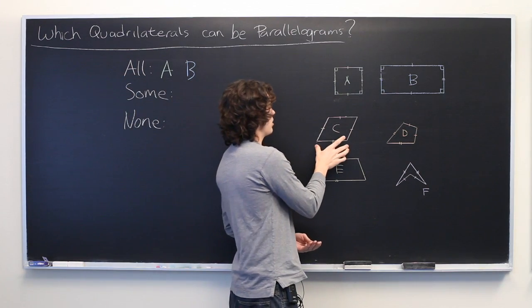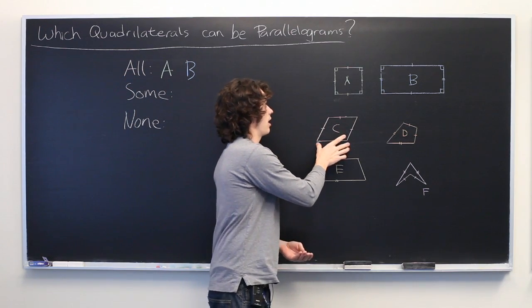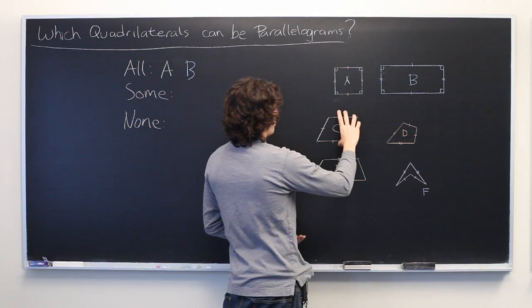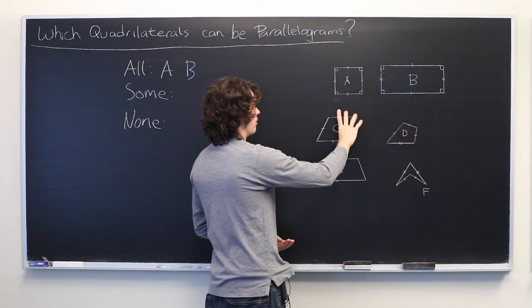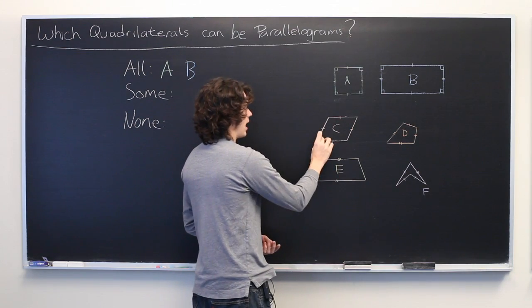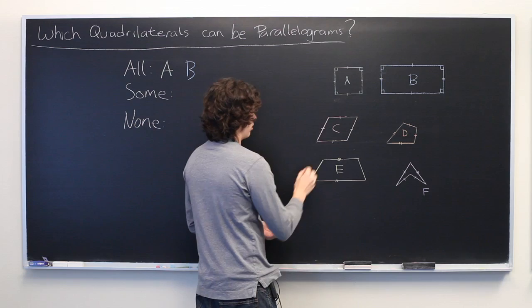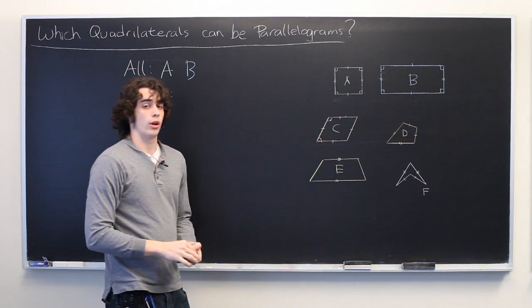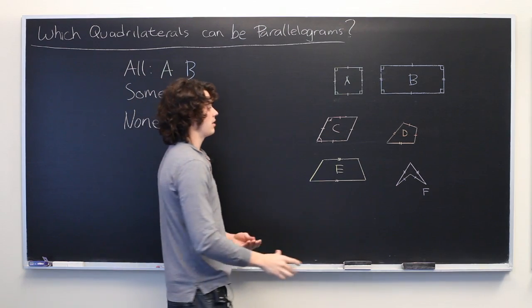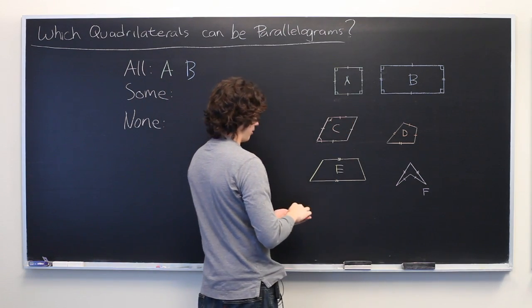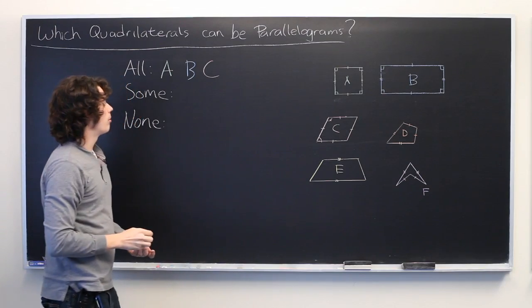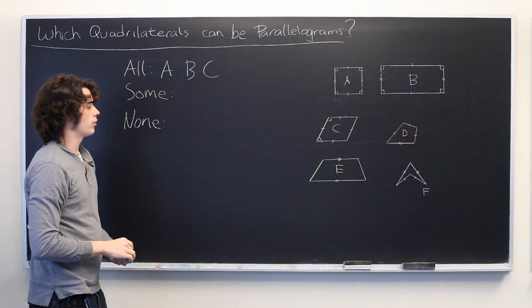Now, the rhombus is also of the class that every single one is a parallelogram. A direct consequence of the fact that opposite sides are of the same length is that interior angles on a given side will add up to 180 degrees. And as such, opposite sides will be parallel. So, all rhombi are parallelograms.